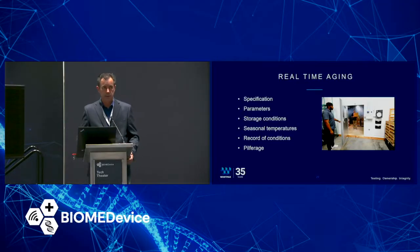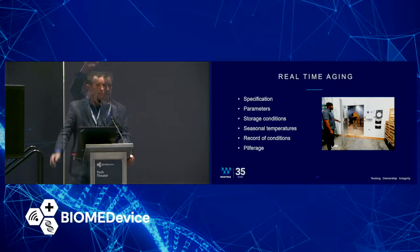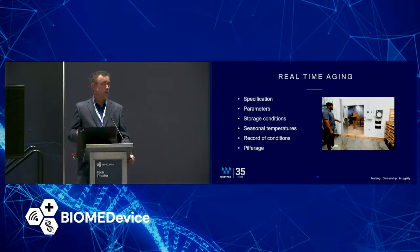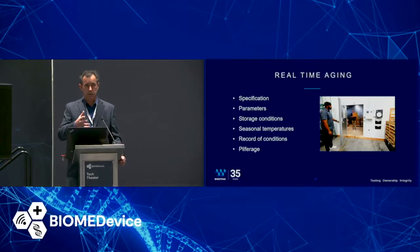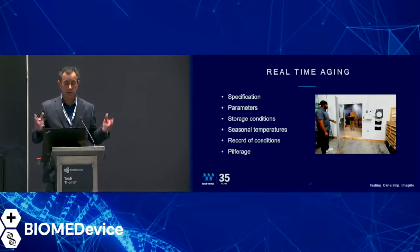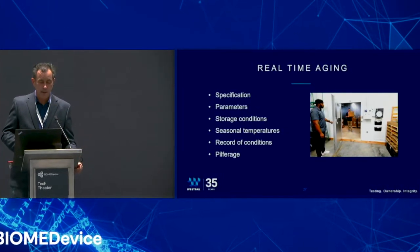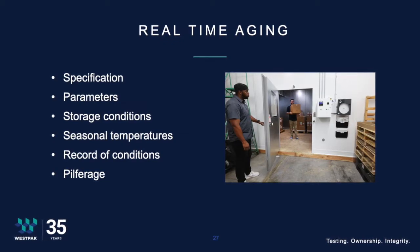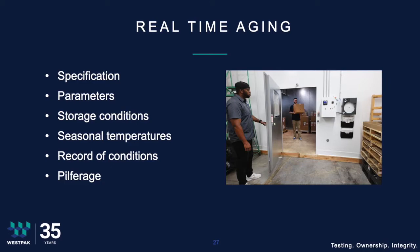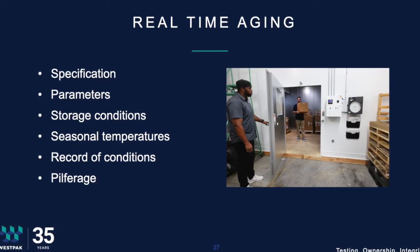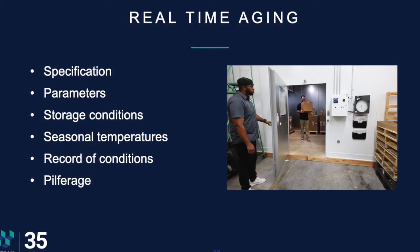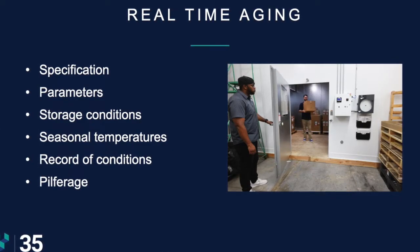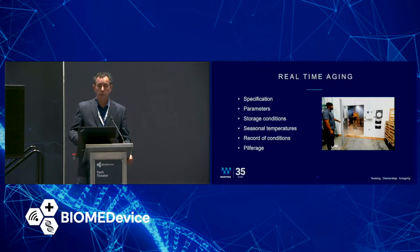Now let's talk about real-time aging. Does anybody know of a real-time aging standard? No, because there isn't one — there's no standard, no specification for real-time aging. So how are we going to define the parameters and storage conditions? We can look to ASTM D4332 for standard conditions, but they don't really call them storage conditions, and everybody's storage conditions will be a little different depending on where you are. You also need to consider seasonal temperatures and recording conditions. If you put samples in a cubicle, do you have a record of those conditions, and what about pilferage?